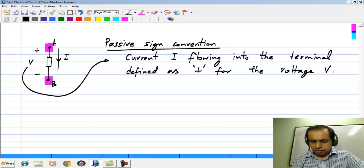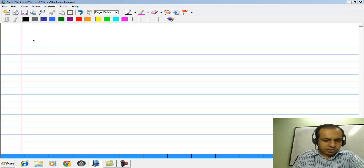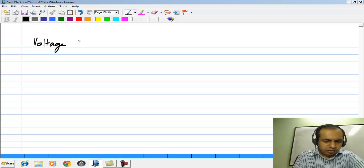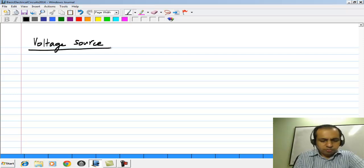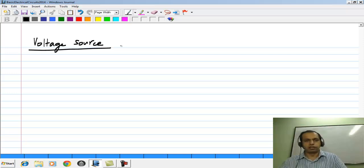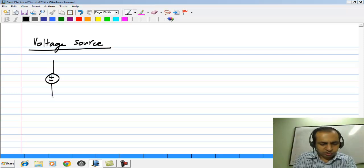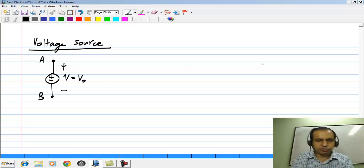Now, with this definition, let us go to the first of our elements which is a voltage source. Voltage and current are the basic electrical quantities and there are sources which establish a given value of voltage or current. The voltage source establishes voltage difference between two terminals. It is given by this symbol with the polarity indicated inside. What does it mean? It means that the voltage between these two terminals A and B measured in this way, which is given by the polarity inside, is a certain V naught. This is the specified voltage.